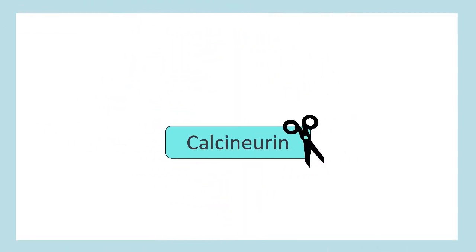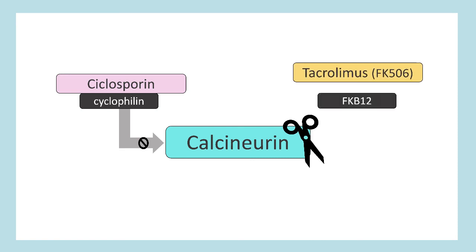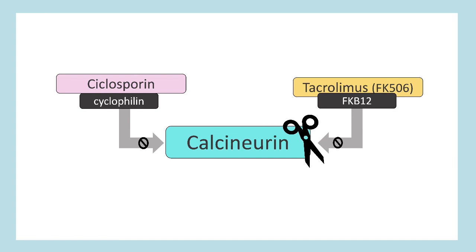And although cyclosporine and tacrolimus both block calcineurin, they do so in slightly different ways. Cyclosporine binds to something known as cyclophyllin to form a complex. And this complex blocks calcineurin. Whilst tacrolimus, also known as FK506, forms a complex with something known as FKB12, which in turn blocks calcineurin.